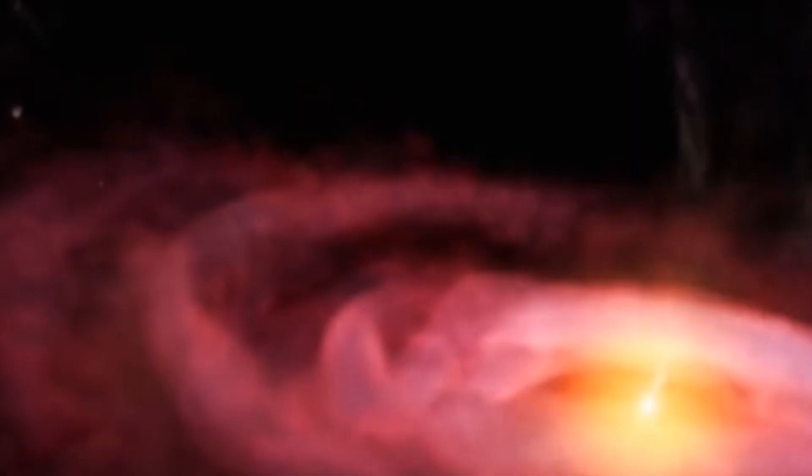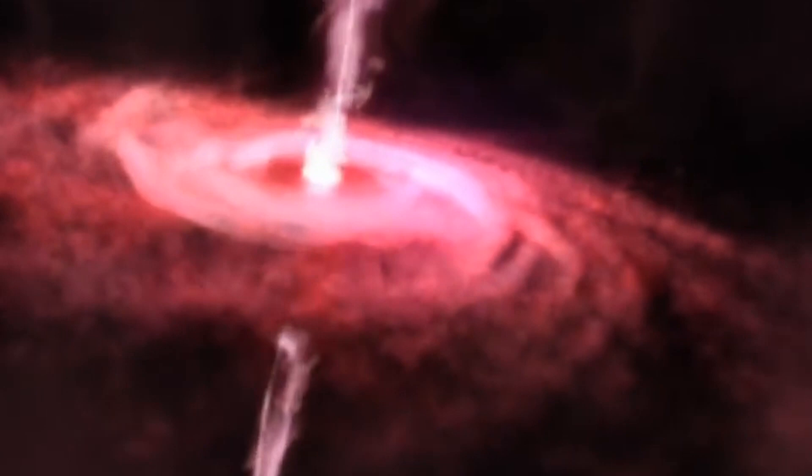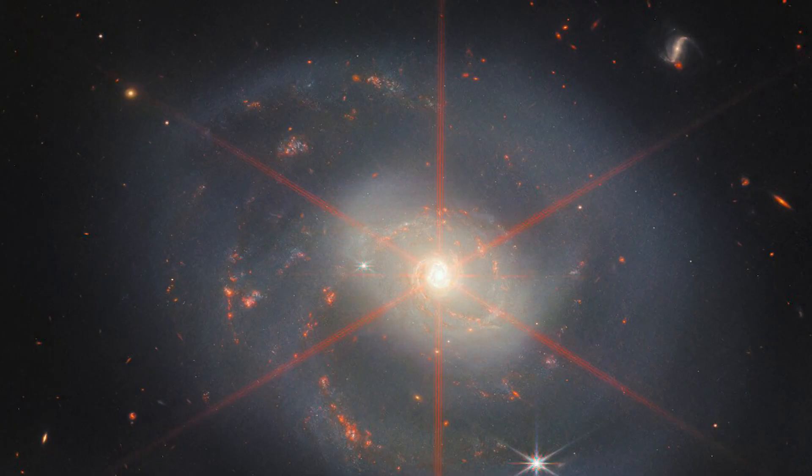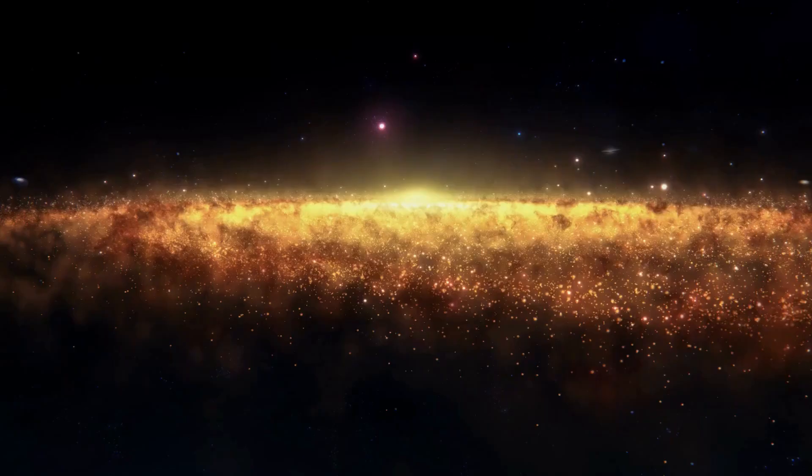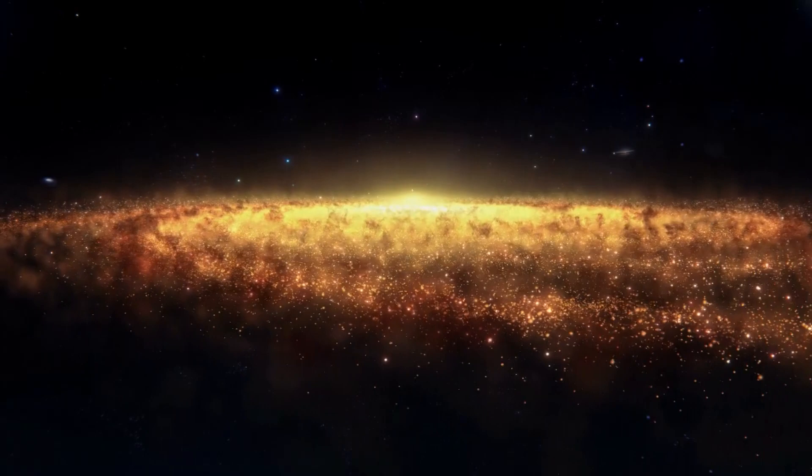In addition, highly ionized, diffuse atomic gas seems to be escaping the nucleus at about 6.4 million kilometers per hour, which is part of a galactic outflow that was previously spotted from the ground but now reveals breathtaking clarity with Webb.